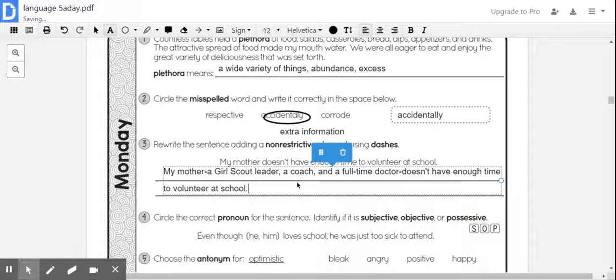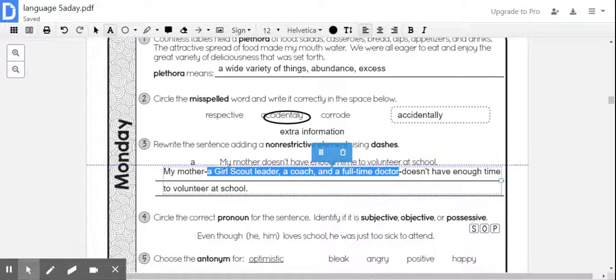So again, my non-restrictive element is this part right here where I'm talking about my mother, saying she's a Girl Scout leader, a coach, and a full-time doctor. And so that's the extra information describing the mother.